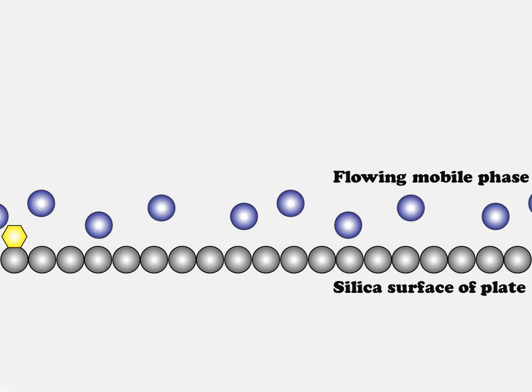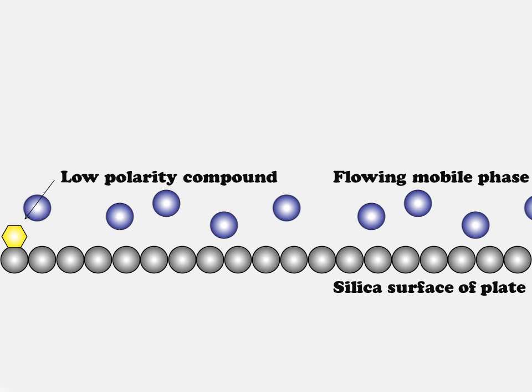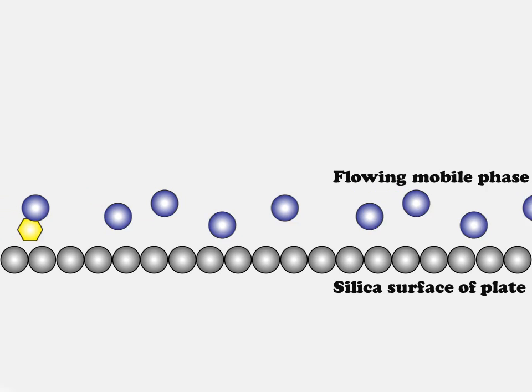Now, in contrast, let's take a look at the lower polarity of the two compounds. If I similarly introduce this compound into the system at the upstream end and then release it, let's watch what happens. Again, it moves when it's in the mobile phase and is stationary while on the silica, but notice that the residence time on the silica is very low now because its relative affinity is decreased compared to the higher polarity material. What this means is that the compound will move faster through my chromatographic system.